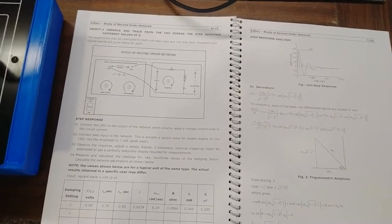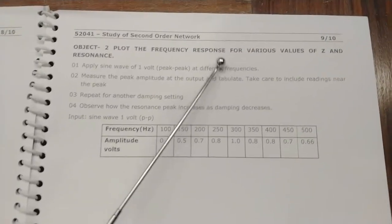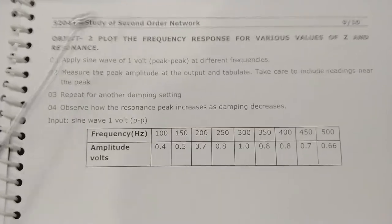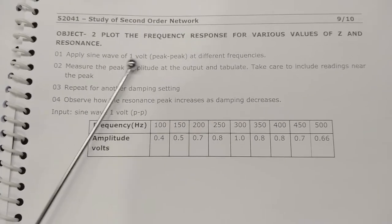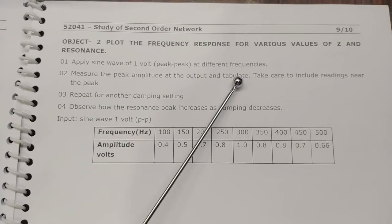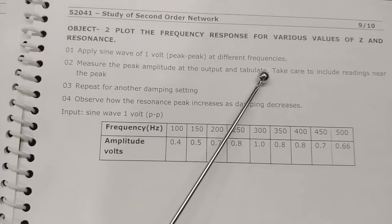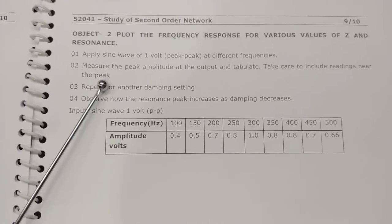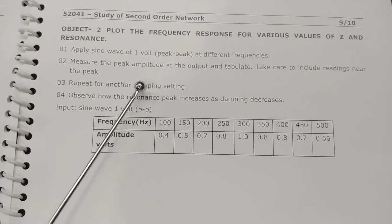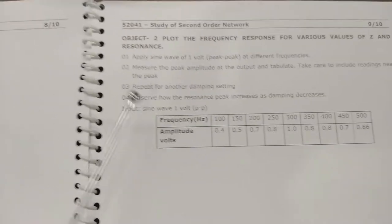This is how we observe and trace from the CRO the step response for different values of zeta. Now we will go to the second practical, which is to plot the frequency response for various values of zeta and resonance. For this we have to apply a sine wave of 1 volt peak to peak at different frequencies, then measure the peak-to-peak amplitude at the output and tabulate.